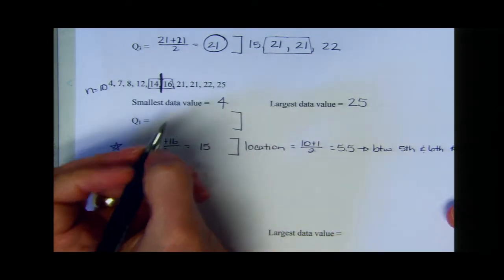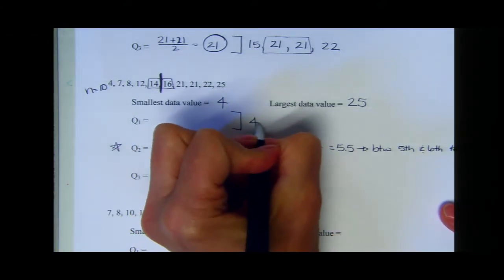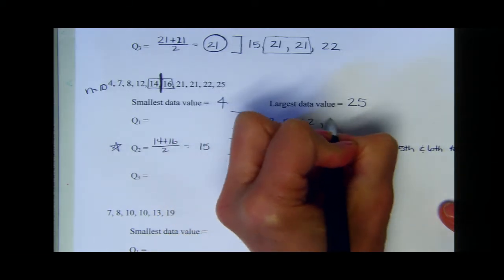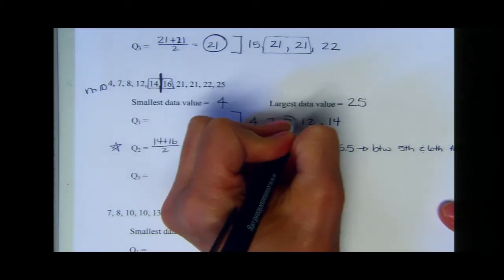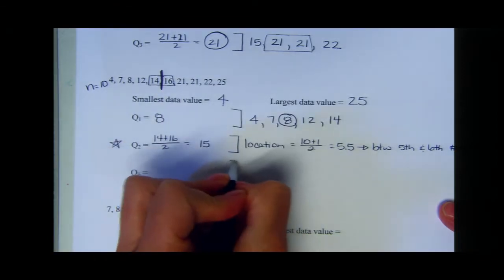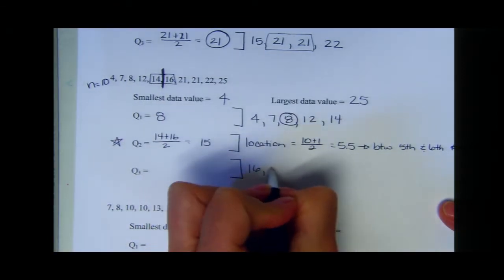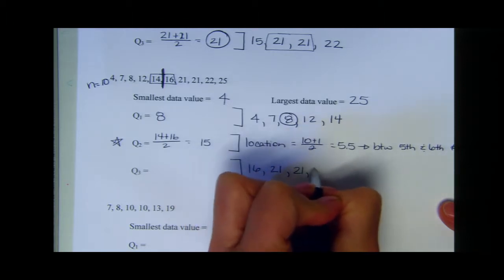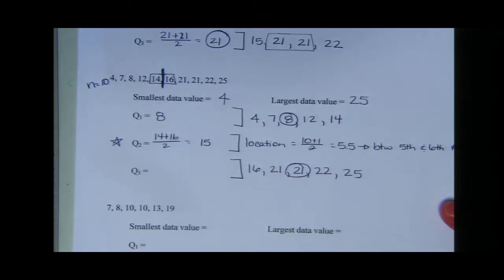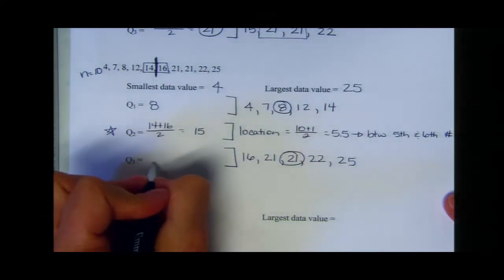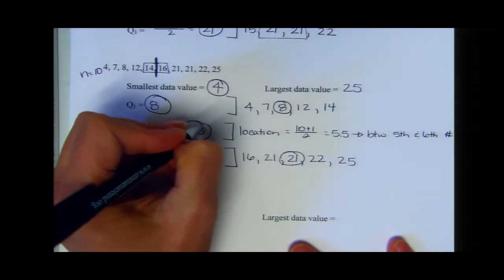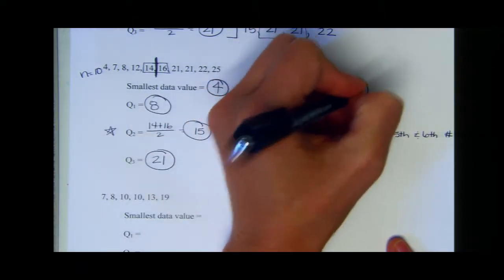To find quartile one, we look at the lower five numbers: four, seven, eight, twelve, and fourteen. The middle number is eight, so quartile one is 8. For quartile three, we use: sixteen, twenty-one, twenty-one, twenty-two, twenty-five. The middle number is twenty-one, so quartile three is 21. My five number summary is: 4, 8, 15, 21, and 25.